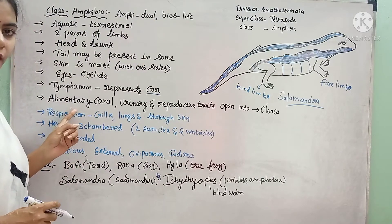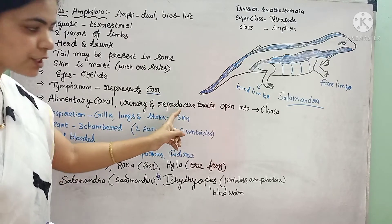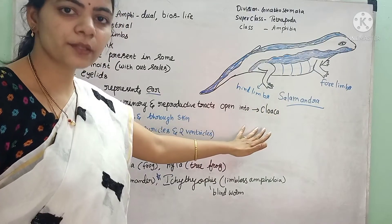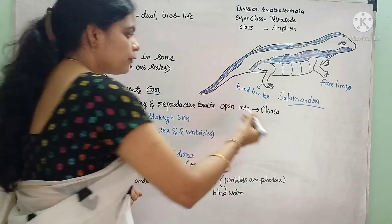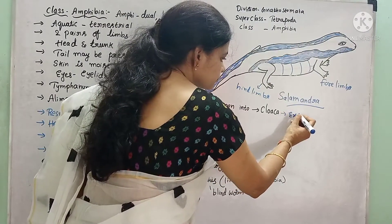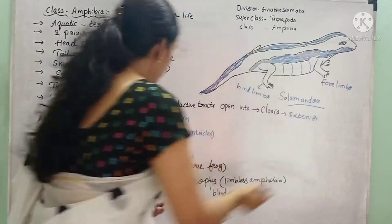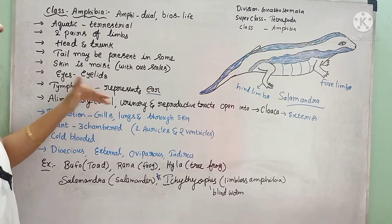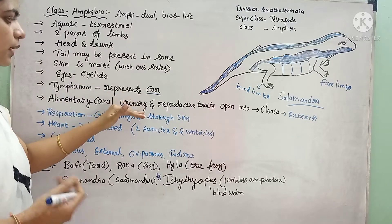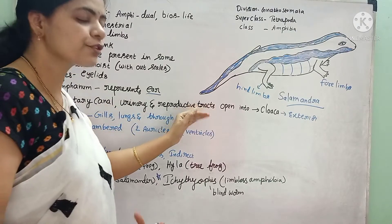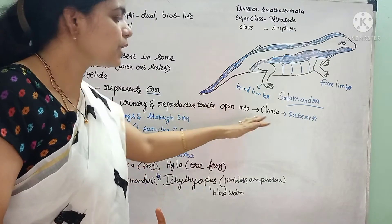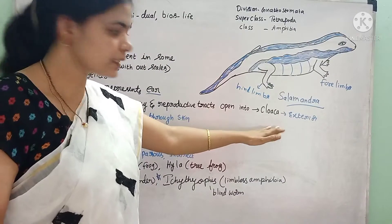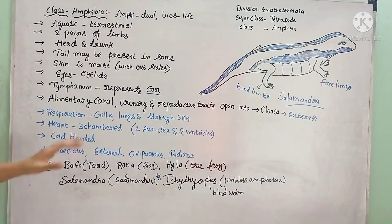The alimentary canal, urinary system, and reproductive tracts all open into a common chamber called the cloaca, by means of which waste is released to the exterior. The alimentary canal generates waste material, the urinary canal generates waste water, and the reproductive tracts produce gametes — all of these reach the cloaca and are released out through the external aperture called the cloaca.